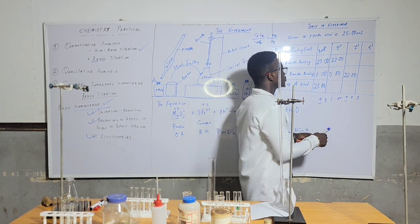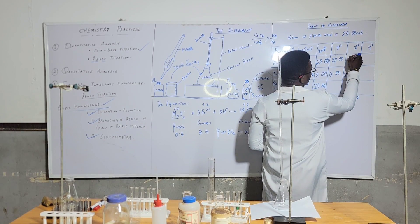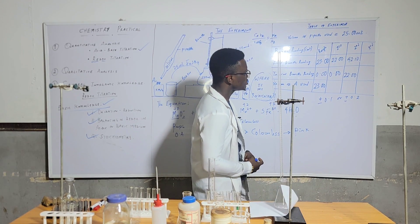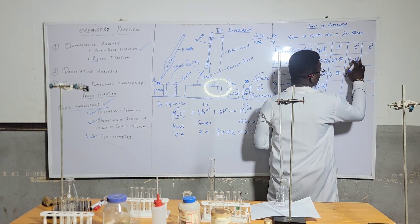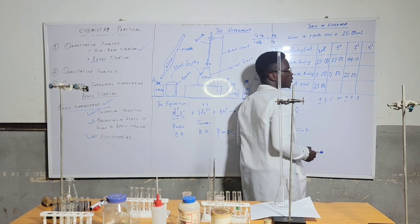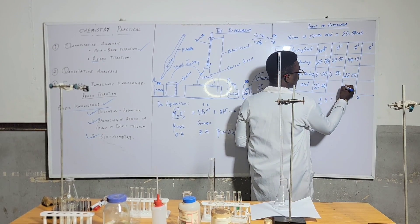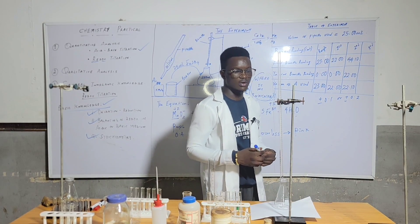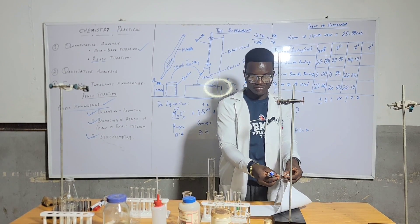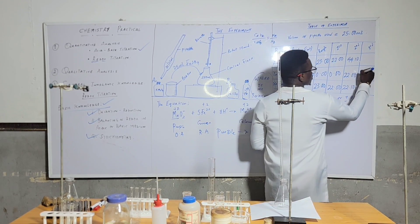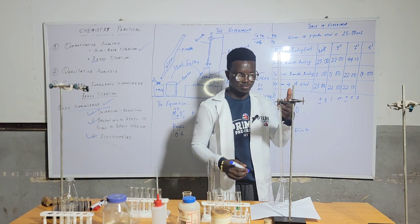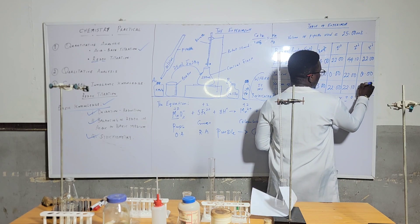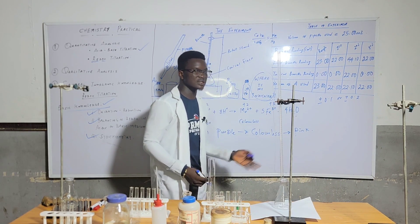For the second titration, you can refill to zero or continue from where you stopped — for example, if you stopped at 22.20 you can start dropping from there. Let's say it drops to 44.10 — subtract 22.20 to get 21.90, which is close to 22.00 from the first. You can carry out another titration, refill to 0.00, and let it drop again. Once you have your concordant values, your table is recorded.